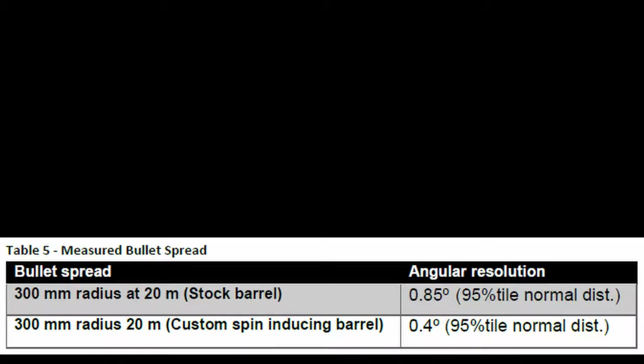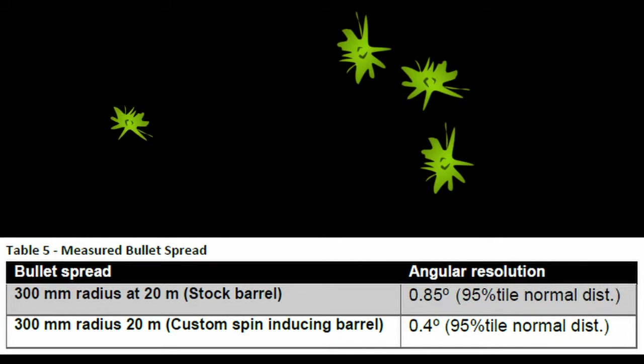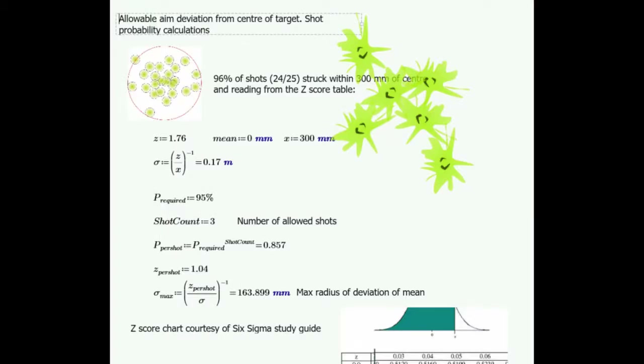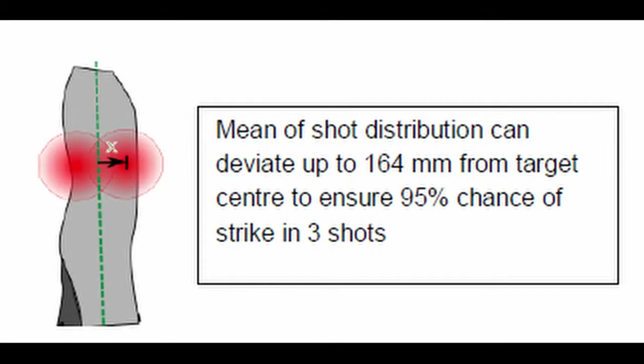For paintball gun properties, we're not going to build a paintball gun, so this falls under the invariable constants in our design equations. You shoot a statistically significant number of shots against the wall, figure out the standard deviation from that, and from there you can figure out your maximum allowed deviation from the target center that will still ensure a 95% chance of hits in three shots.